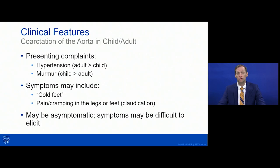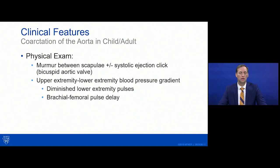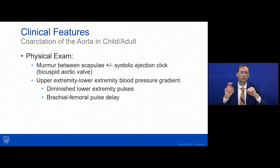On exam, there is a systolic ejection murmur heard loudest over the back, and possibly a click from a bicuspid aortic valve. The hallmark physical finding is a discrepancy or gradient between upper and lower extremity systolic blood pressure by non-invasive cuff. You may also see diminished lower extremity pulses and appreciate a brachial-femoral pulse delay, where the pulse is felt slightly earlier at the brachial or radial artery than at the femoral artery.